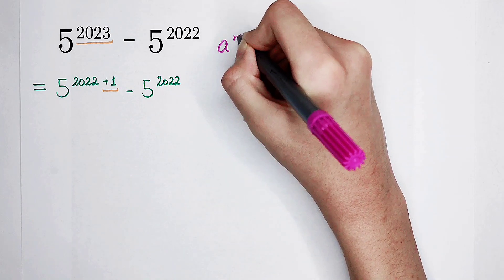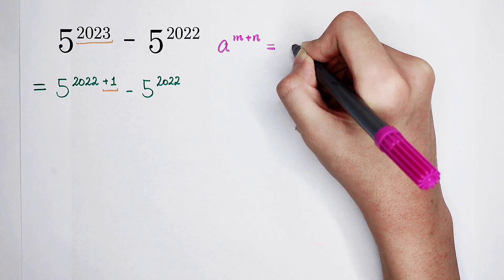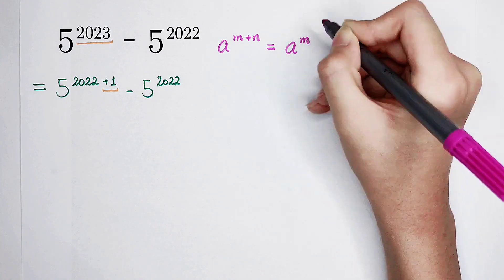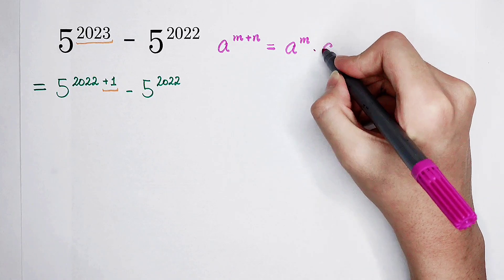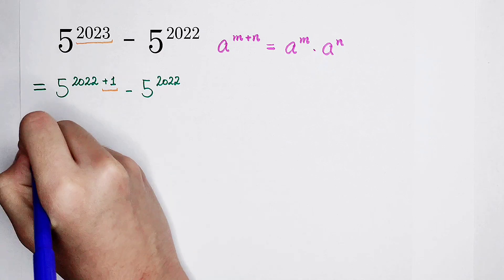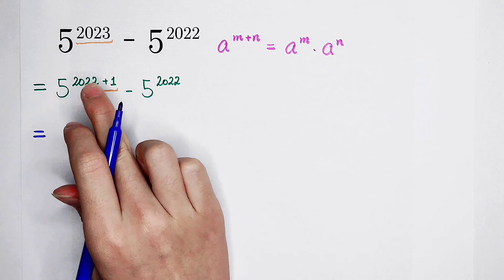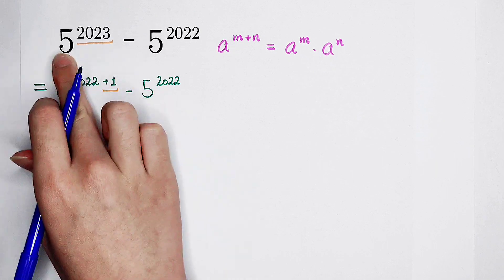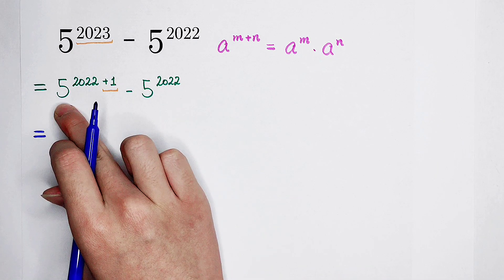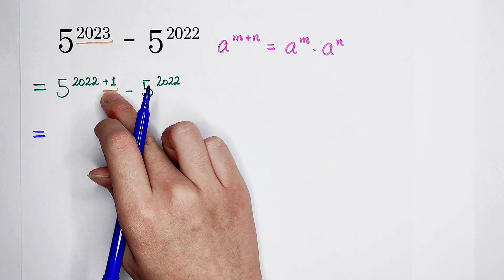That is, a to the power of m plus n is equal to a to the power of m times a to the power of n. So now, as our second step, this 2022 then plus 1. In this number, a is 5, m is 2022, n is 1. Substitute it in and then we can get...